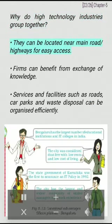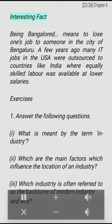Why do high technology industries group together? They can be located near main roads and highways for easy access. Firms can benefit from exchange of knowledge. Services and facilities such as roads, car parks, and waste disposal can be organized efficiently. Being Bangalored means to lose one's job to someone in the city of Bengaluru. A few years ago, many IT jobs in the USA were outsourced to countries like India, where equally skilled labor was available at lower salaries.